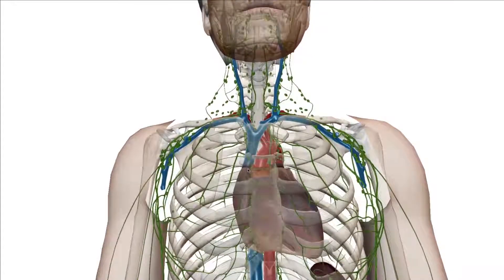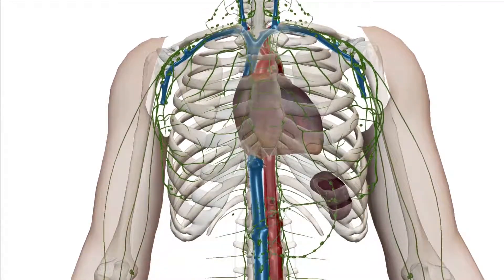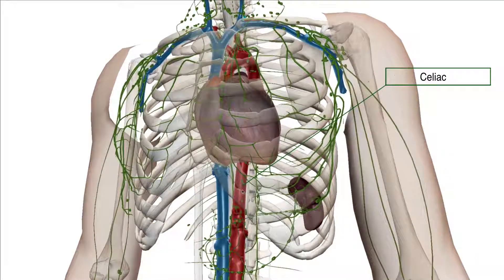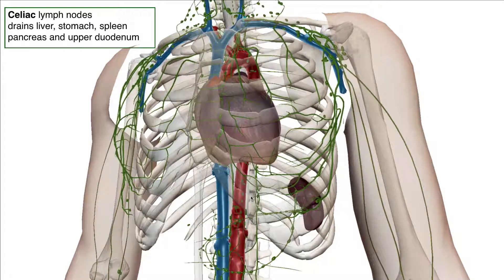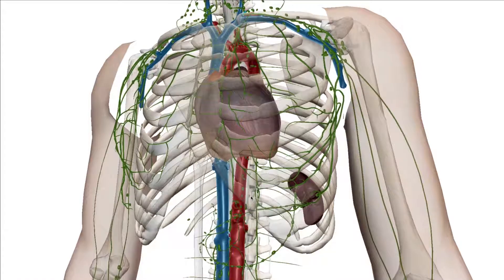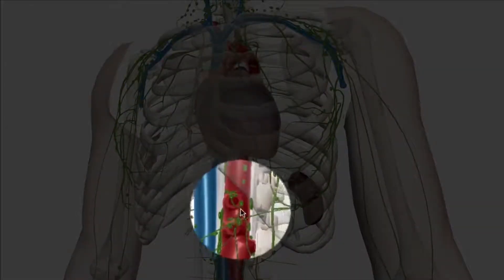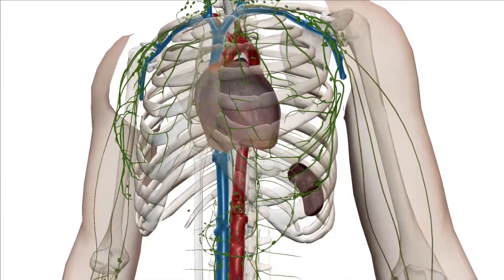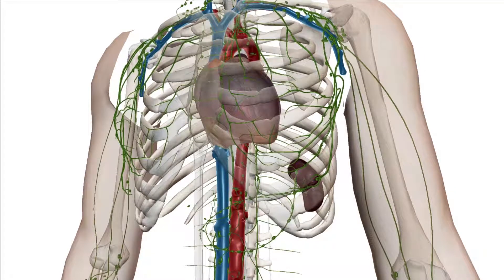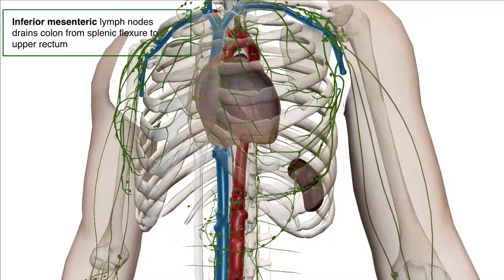Now let's look at the celiac region. You can see these lymph nodes here around the celiac region. They are responsible for draining organs such as the liver, stomach, spleen, pancreas, and the upper duodenum. The superior mesenteric lymph nodes are also within this region and drain the lower duodenum, jejunum, ileum, and colon to the splenic flexure. Finally, the inferior mesenteric lymph nodes drain the colon from the splenic flexure to the upper rectum.